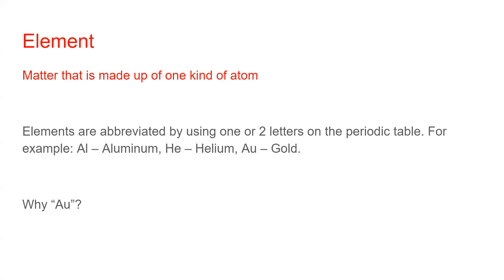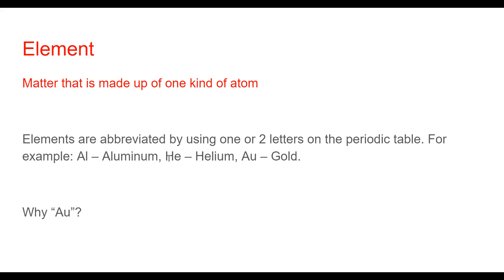Whenever we have a weird symbol for an element, it's usually because it comes from the Latin term for that element. Gold was called 'aurum' in Latin, which means gold — that's where we get the symbol Au. So that's where some of the symbols come from, and I'll make sure that's as little confusing as possible.